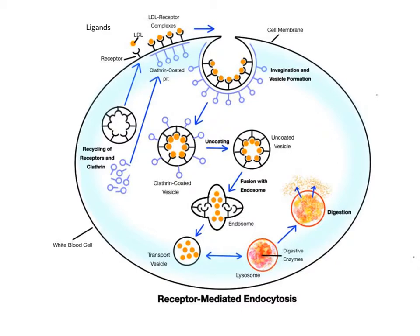Phagocytosis is not a selective process — a wide variety of chemicals and cells can be ingested. This is in direct contrast to receptor-mediated endocytosis, which is extremely specific in what it brings into a cell, like a kid who is a picky eater. In this process, the cell ingests specific chemicals from the ECF that it needs to function. We previously discussed these chemicals called ligands, which are specific to membrane protein receptors on the cell membrane.